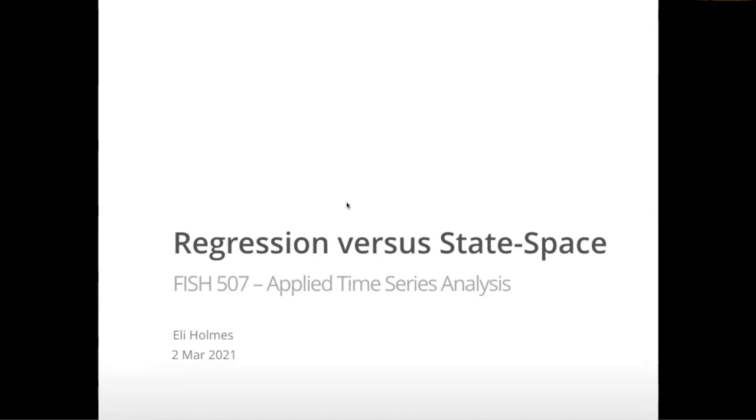I wanted to go over that because a number of you are using a regression of some type or a GAM with correlated errors as one of your models that you're fitting. That's absolutely fine for the course. But I just want to make sure that you have a handle on how these are different than a state space model or model with a hidden random walk.